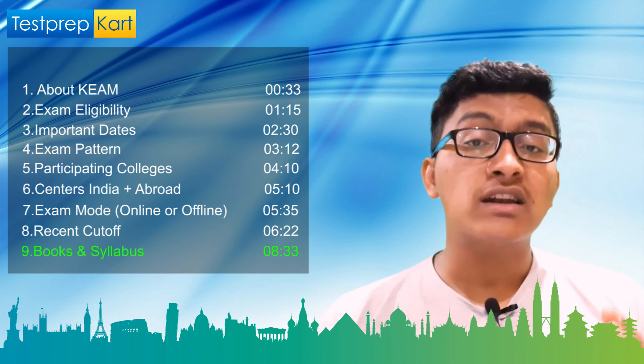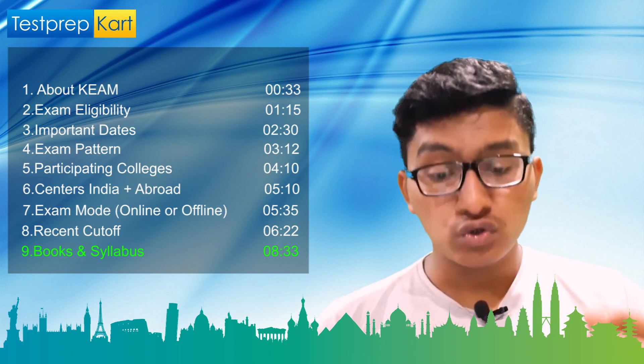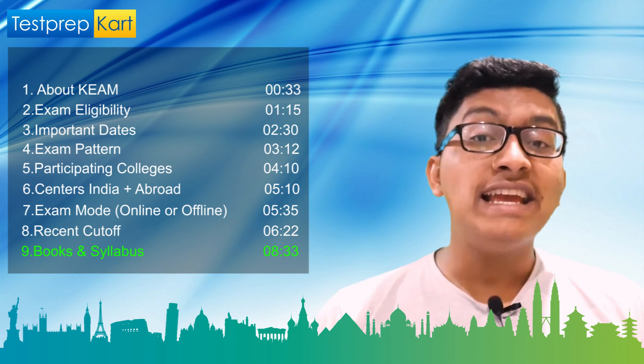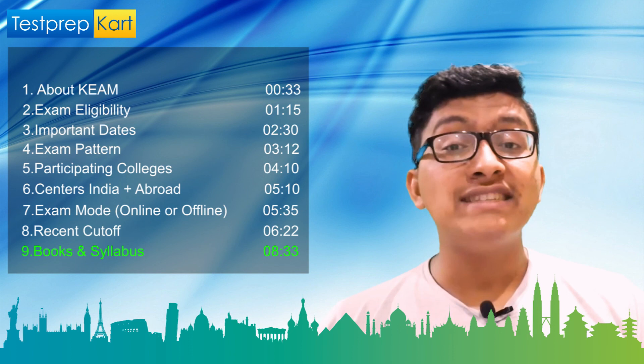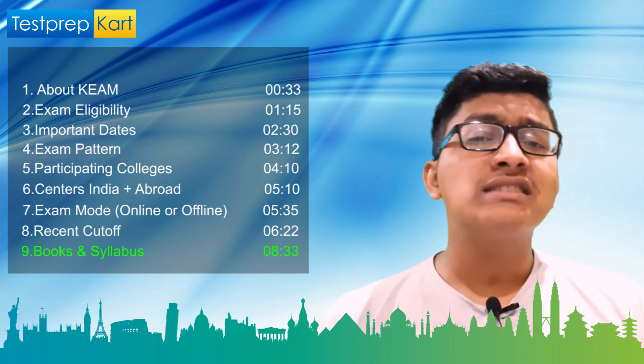For Chemistry, focus on P-Block Elements, Equilibrium, Chemical Bonding, and Thermodynamics. For Mathematics, the five most important chapters based on previous year trends are: Matrices and Determinants, Integral Calculus, Sequence and Series, 3D Geometry and Vectors, and Probability. The syllabus of KEAM is the same as the Class 11 and Class 12 syllabus.